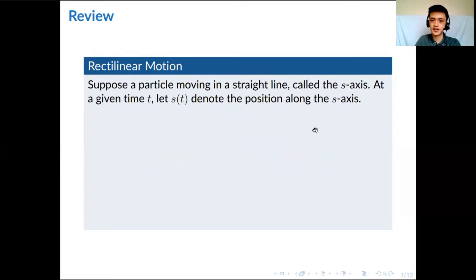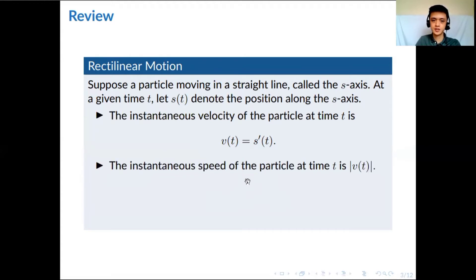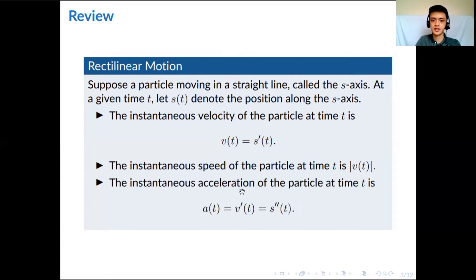Now suppose there is a particle moving in a straight line — the particle can be anything, like a car or even a person. At a given time t, we let s of t be the position of this particle along the s-axis. It makes sense to say that the velocity function is just equal to the derivative of the position function, because the derivative is defined as the limit of the change in position over the change in time. So velocity is the instantaneous velocity of the particle. For speed, we just take the absolute value since we don't take direction into account. Acceleration is just the derivative of the velocity function, or the double derivative of the position function.